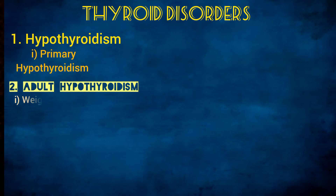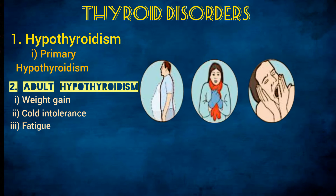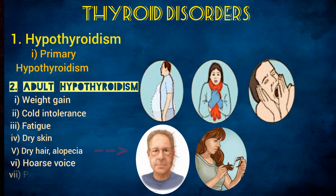Moving on to adult hypothyroidism: in general the patient will have weight gain, cold intolerance, and fatigue, all due to a decreased metabolic rate. They will also have dry skin, dry hair, alopecia, hoarse voice, and periorbital puffiness. The reason for periorbital puffiness is the same as for macroglossia.